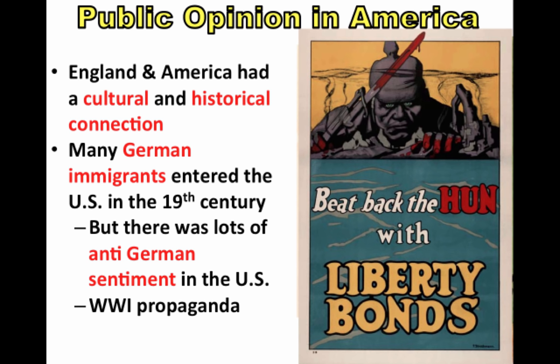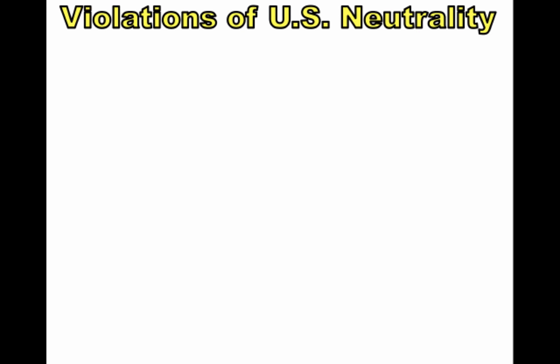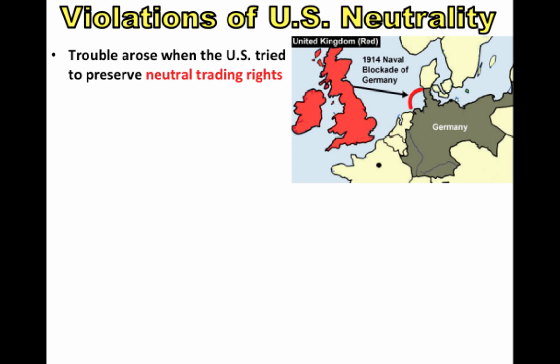The big drama is going to come over violations of US neutrality. Trouble arose when the US tried to preserve neutral trading rights. The powerful British Navy blockaded Germany, wanting to keep supplies from reaching their enemy. This naval blockade seized American ships, and many people in the United States were angered over the violations of the principle of freedom of the seas — American ships were supposed to be able to travel freely, and this was not happening.